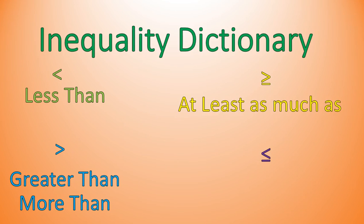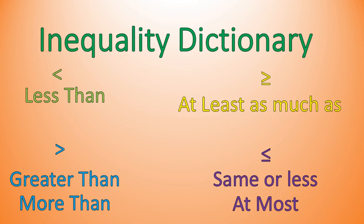The yellow symbol there means 'at least as much as' — this is the greater than or equal to symbol. It seems funny to say 'at least' when we're talking about greater than, but that's what it means. If someone has at least $5, it means they have $5 or more. The less than or equal to sign can be shown by saying 'the same or less' or 'at most.' You have at most five gold medals means less than or equal to five gold medals. Those are just a couple of ways to think about inequalities in my inequality dictionary.